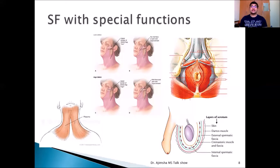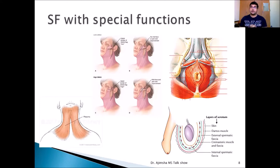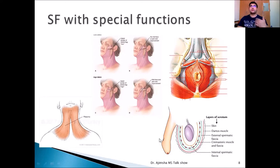Superficial fascia layers can sometimes absorb muscle fibers to create specialized structures in the body. A few examples of superficial fascia with special functions include the platysma, the SMAS of the face, the external anal sphincter, and the Dartos fascia of the scrotum.